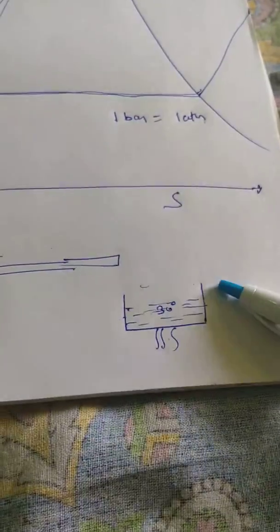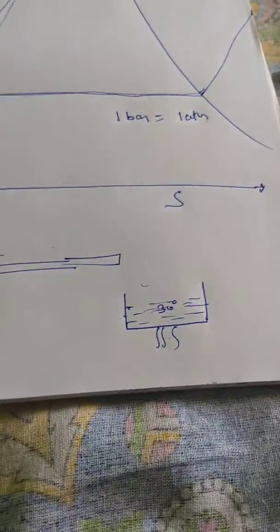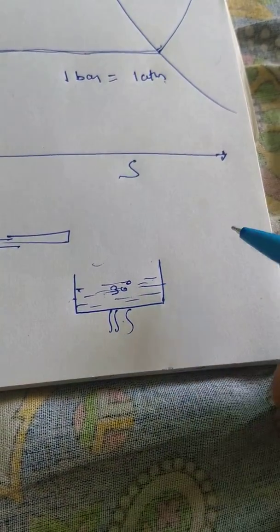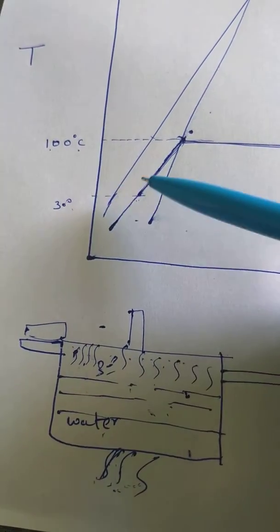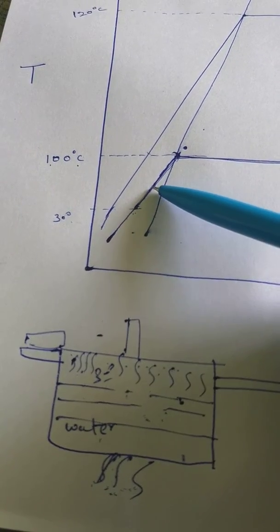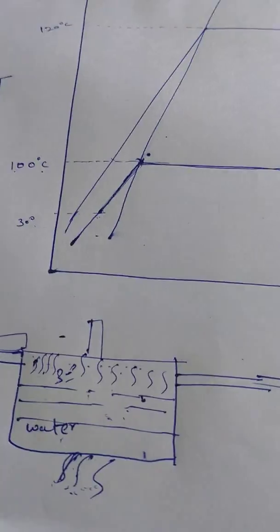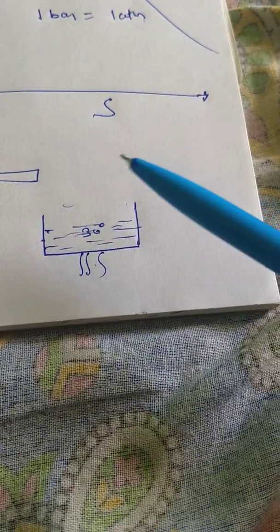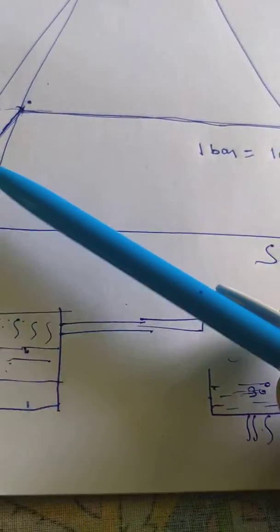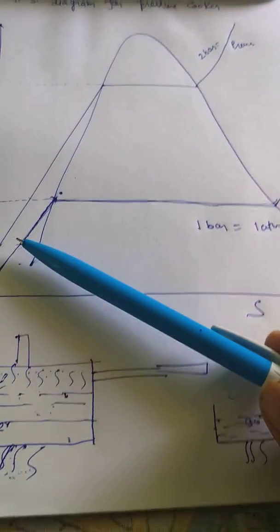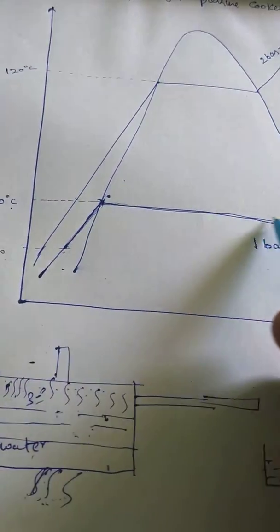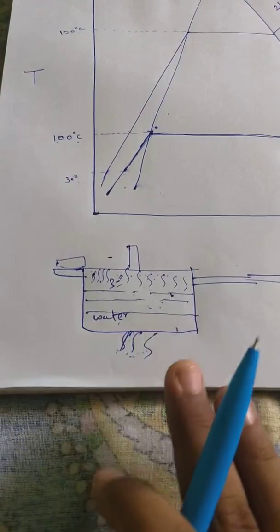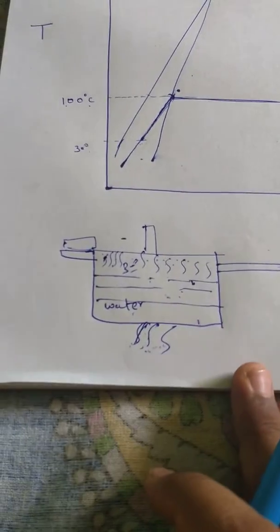First, we will show what happens if we don't put the lid — how to show the boiling process. Since water is taken from the atmosphere, it starts at around 30°C. As we give heat, the temperature increases until it reaches 100°C. Since everything is open, pressure remains constant throughout, so we stay on the 1 bar constant pressure line. Once temperature reaches 100°C, steam formation and boiling begin.